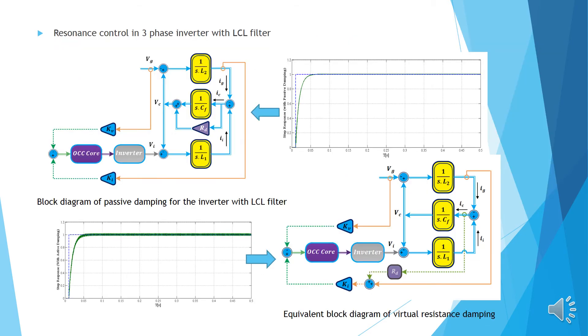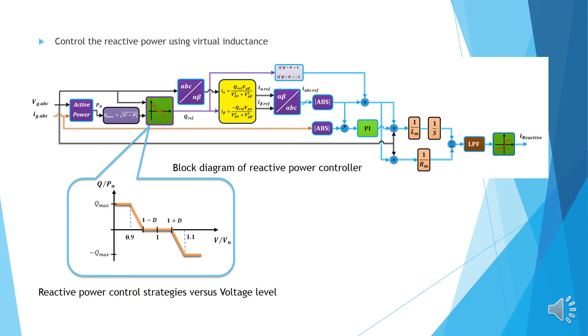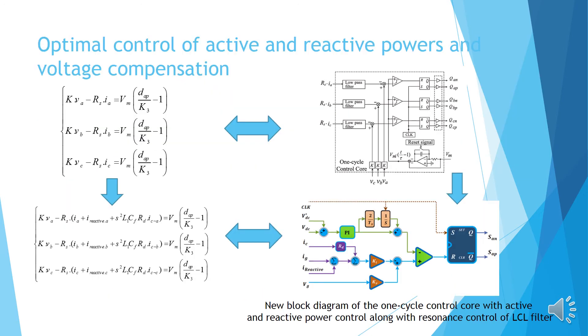The resonance point is introduced due to the inherent characteristic of the LCL. Control the reactive power using virtual inductance. Optimal control of active and reactive powers and voltage compensation. By combining cases mentioned in the previous slide in the upper equation, this equation becomes the down equation. And the new block diagram of the one-cycle control core with active and reactive power control along with resonance control of LCL is shown in the right corner figure.